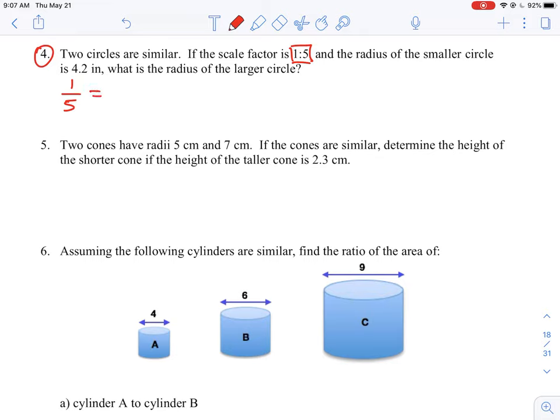We need to look at what scale is. Remember, scale is the ratio of an image object to the real object. So the 1 here refers to the small object, and the 5 refers to the large object. That helps us understand what we're talking about.